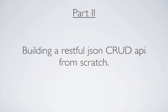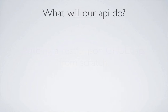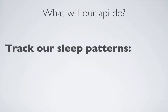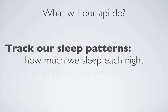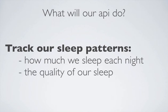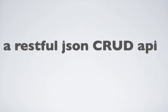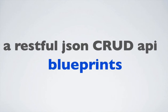In the last episode, I went over in excruciating detail how to make a RESTful JSON CRUD API. The goal of the API was to track our sleep patterns, specifically how much we sleep each night and the quality of that sleep. The best way to show you how blueprints help you automate the creation of an API is to repeat the process of building the RESTful JSON CRUD API, but with the power of blueprints added.